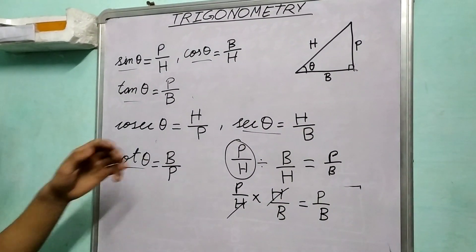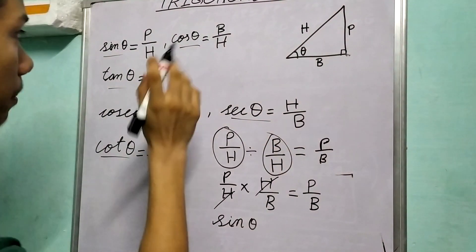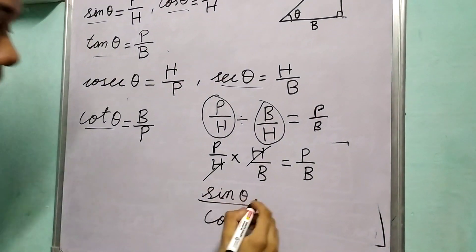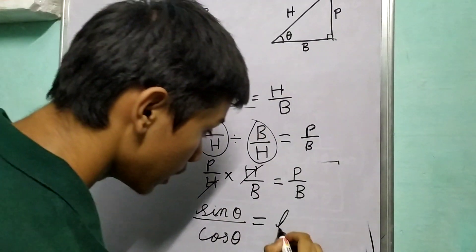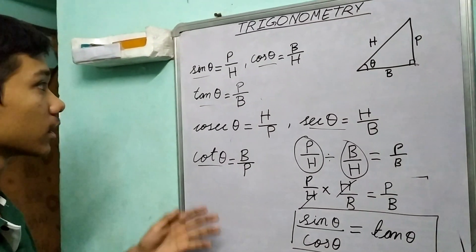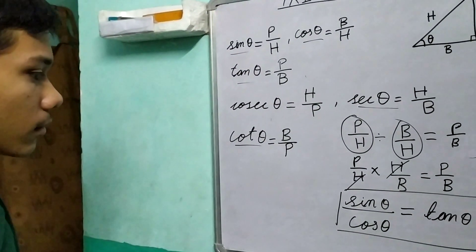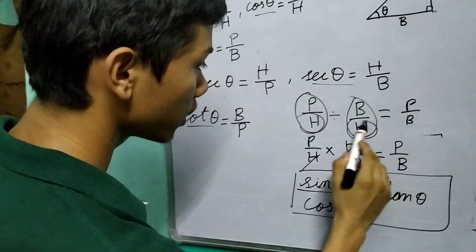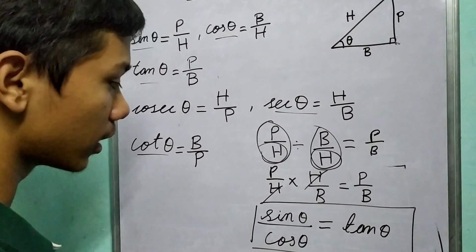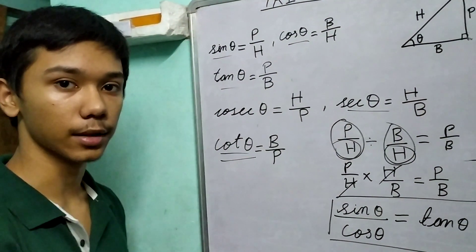Now what is P by H? P by H is sin theta. What is B by H? B by H is cos theta. And what is P by B? P by B is tan theta. So we have arrived at an important conclusion that if we divide sin and cos, we get the tan of that angle. So this is an interesting relationship, and sometimes when we don't want to calculate the hypotenuse and we have the value of sin and cos, we can easily evaluate for tan theta and then for cot theta, because we know that cot theta is 1 upon tan theta.